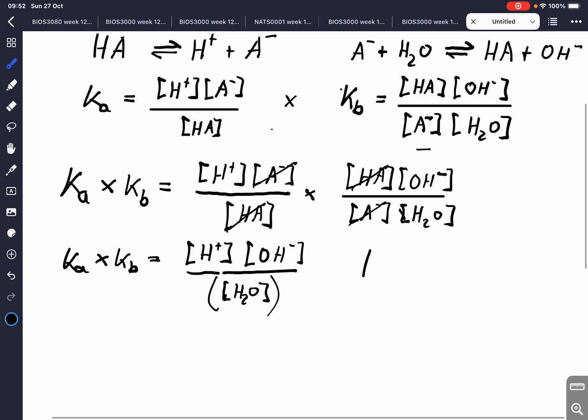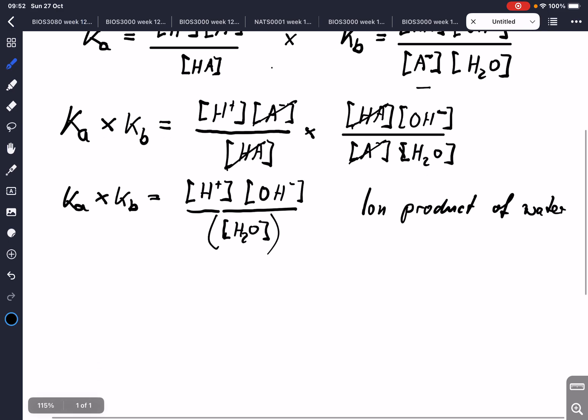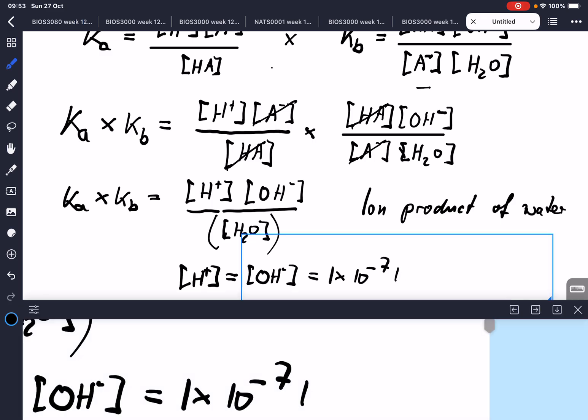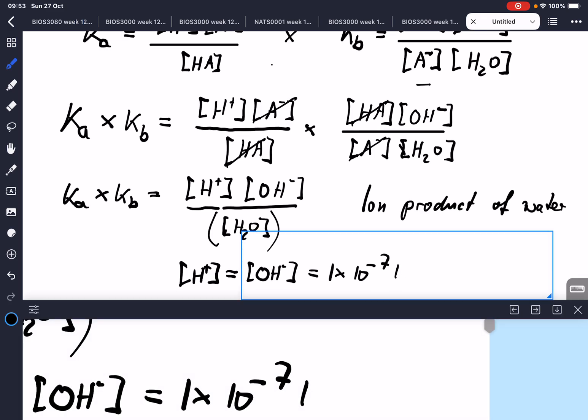It is now just simply the equation for water. And this is actually called the ion product of water. So we know that in water the proton concentration is the same as the hydroxide concentration and it is 1 times 10 to the minus 7 molar. These are these concentrations.